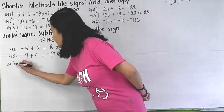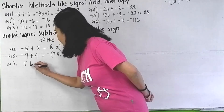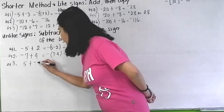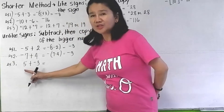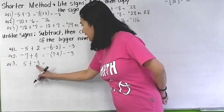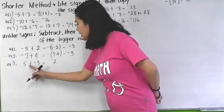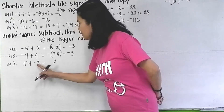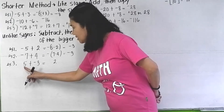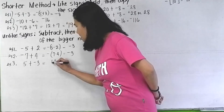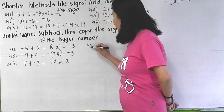In example 3, we have 5 plus negative 3. Subtract: 5 minus 3 is 2. Copy the sign of the bigger — which is bigger, 3 or 5? 5 is bigger. What's the sign of the bigger? Positive. So you just write 2.